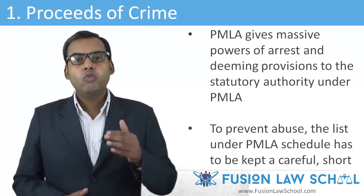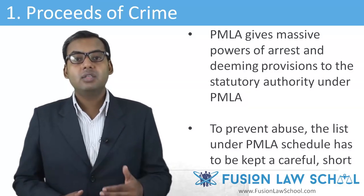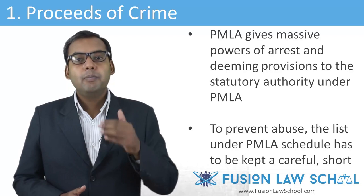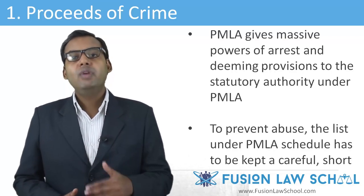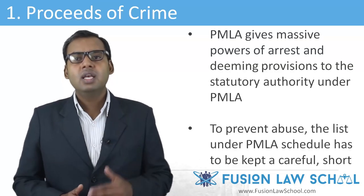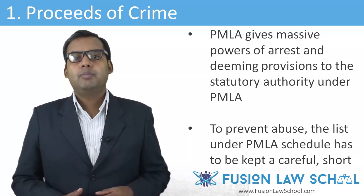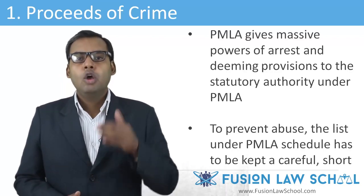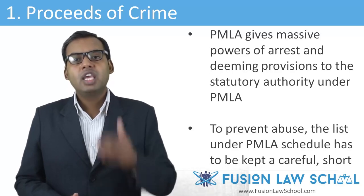There is a specific reason for selecting only the most violent or important crimes under PMLA. Organized crime and the mafia dealing in murder, extortion, terrorism, and prostitution have immense liquid wealth, and with this power of wealth they can evade the grips of law. Hence, PMLA gives massive powers of arrest and deeming provisions to statutory authorities. The powers are more or less draconian in nature, and under normal circumstances such massive powers should be restricted. If used against ordinary criminals, they lose their purpose. We must remember that corrupt statutory officers can be more dangerous than criminals as far as the common man is concerned. That is why, to prevent abuse, the list under the PMLA schedule has to be kept a carefully short list.